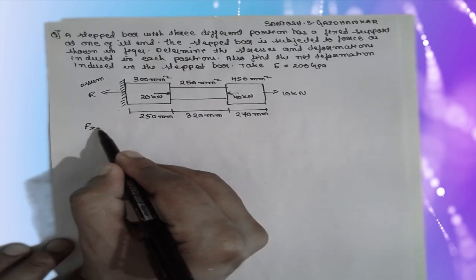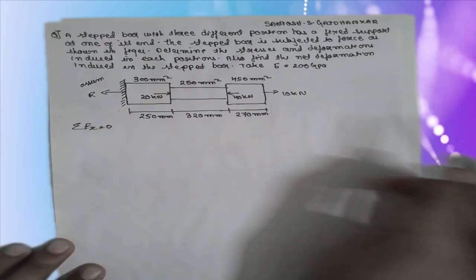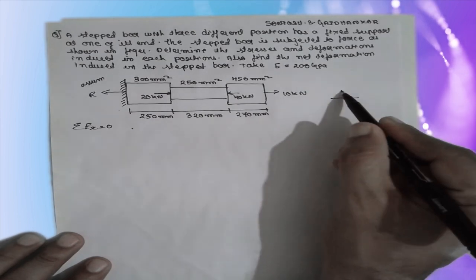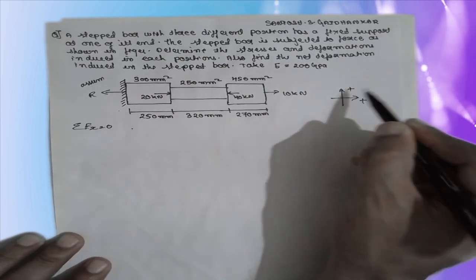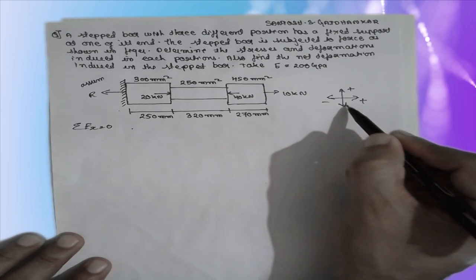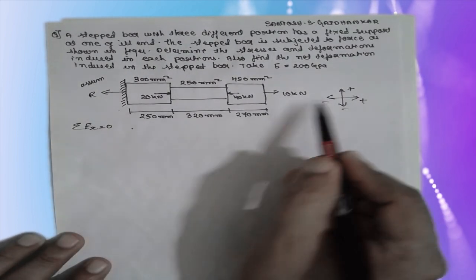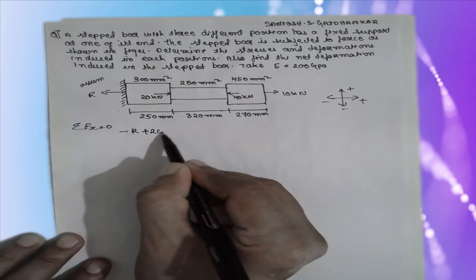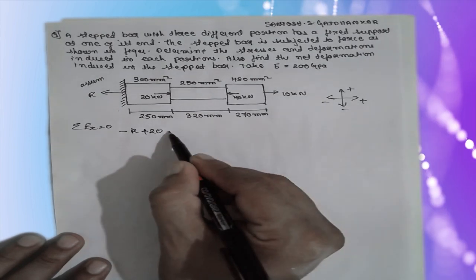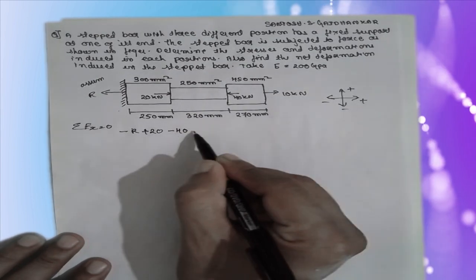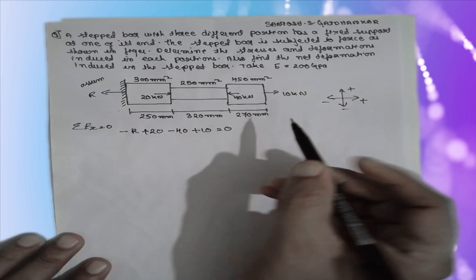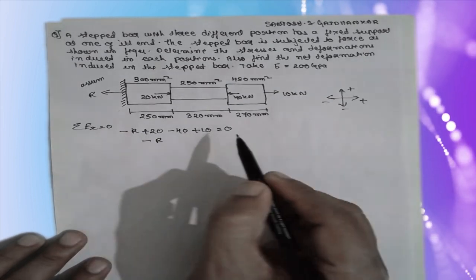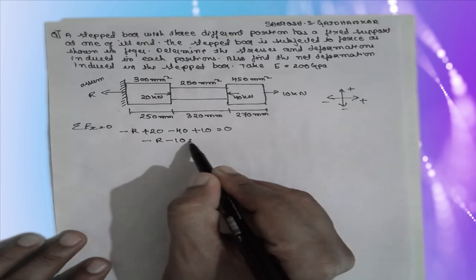Now, summation of forces along the x-axis equals zero. I will consider the rightward direction as positive and leftward as negative. So the equation becomes: minus R plus 20 minus 40 plus 10 equals zero, which simplifies to minus R minus 10 equals zero.